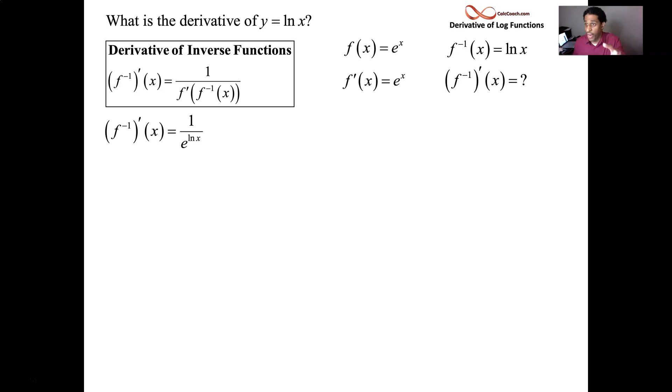The f prime, but not of x, f prime of f inverse. So that's e to the x, rip out the x, put in natural log of x. But that cancels nicely. This is why natural log x's derivative is 1 over x.